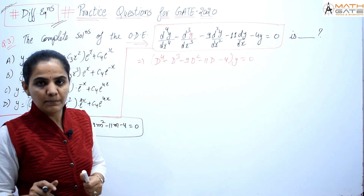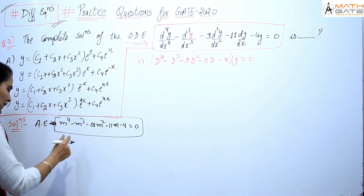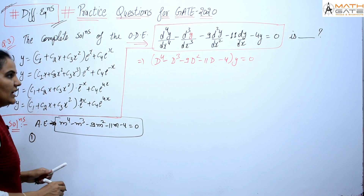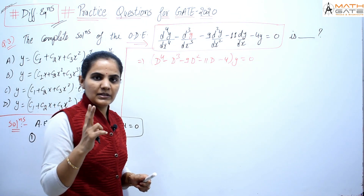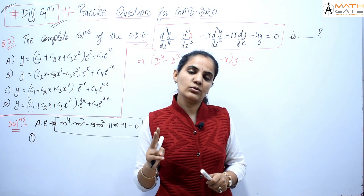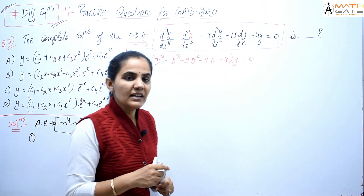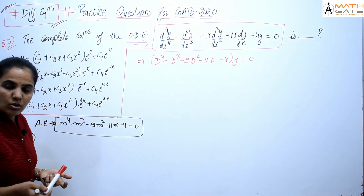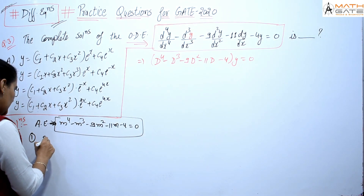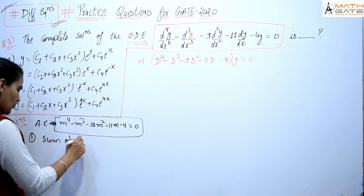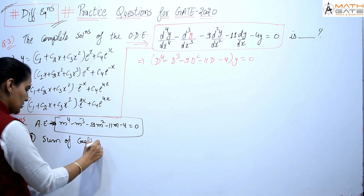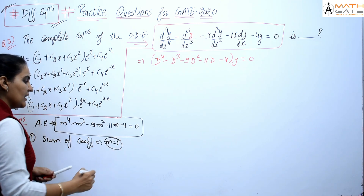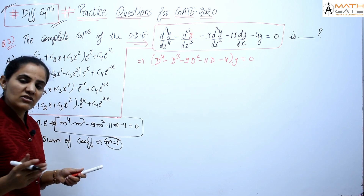There are two important points to keep in mind. First: if the sum of all coefficients equals zero, then m equals 1 is one root, or equivalently m minus 1 is one factor. Here the coefficients are 1, minus 1, minus 9, minus 11, minus 4, and their sum is zero — so m equals 1 is a root.